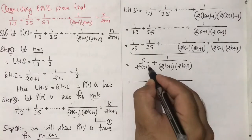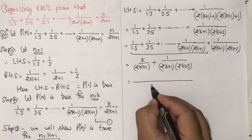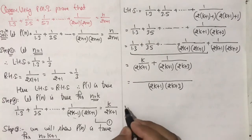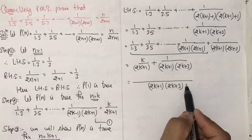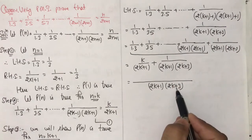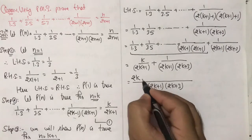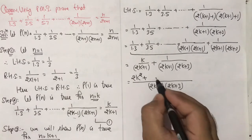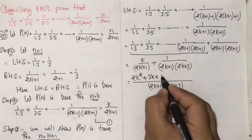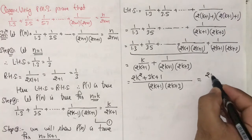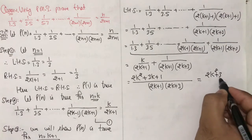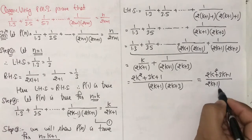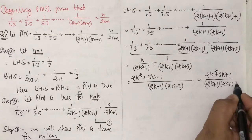Taking LCM of the two terms, LCM = (2k+1)(2k+3). The numerator becomes: k(2k+3) + 1 = 2k² + 3k + 1. So we get (2k² + 3k + 1) / ((2k+1)(2k+3)).